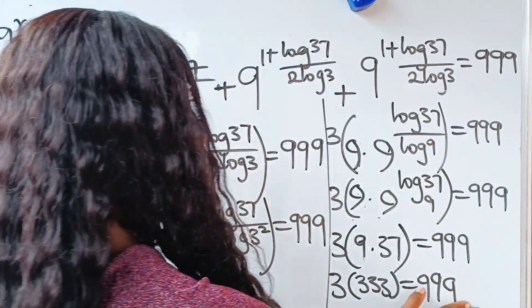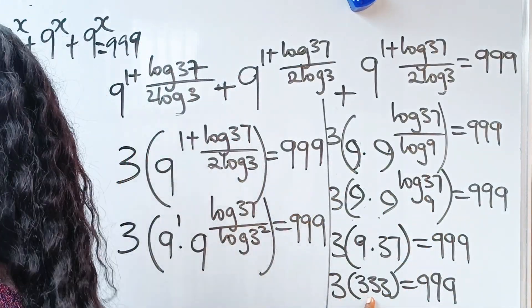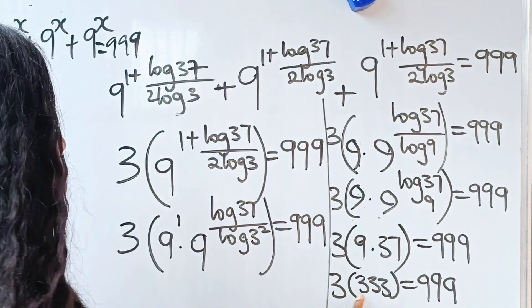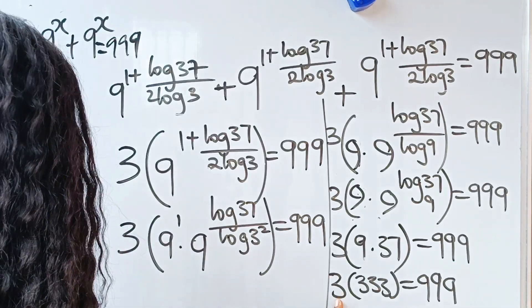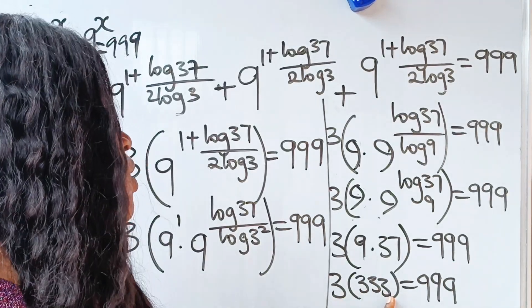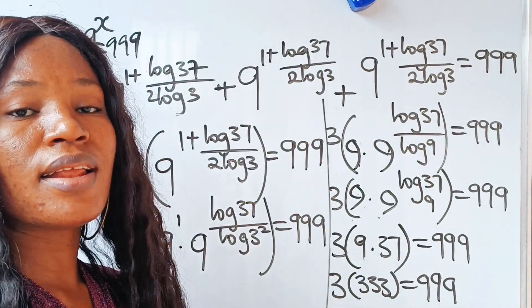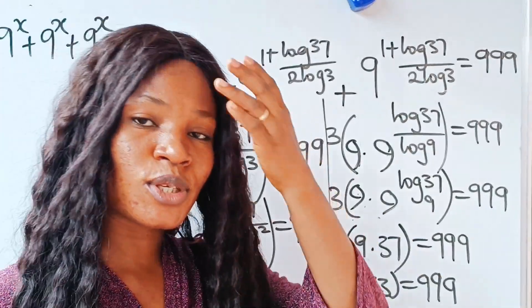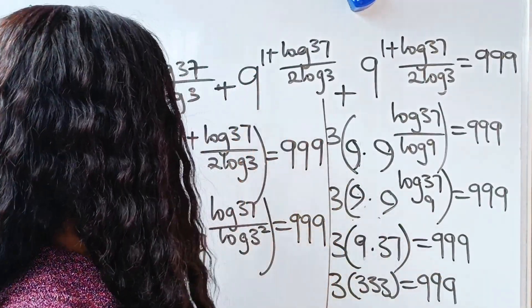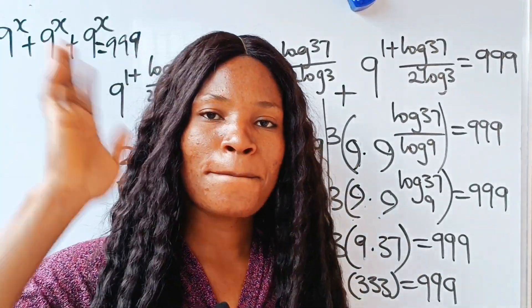When 3 is multiplied by 333, you get 999, and that means our solution is right. Thank you so much for watching and have a lovely day.